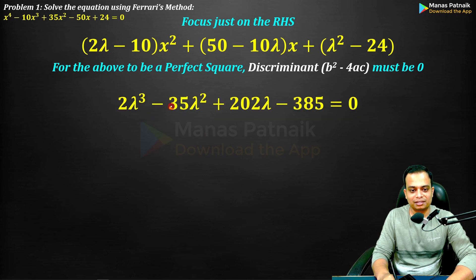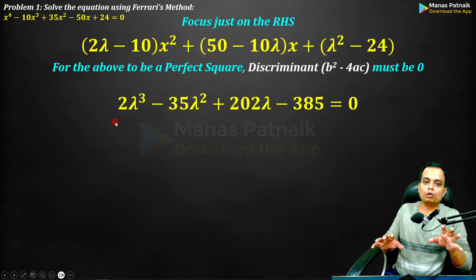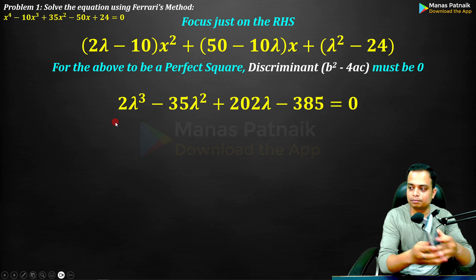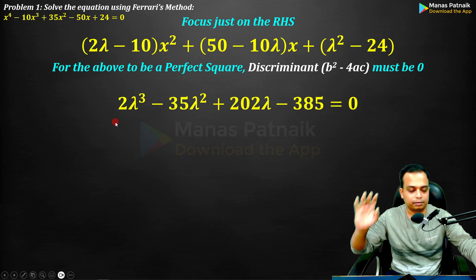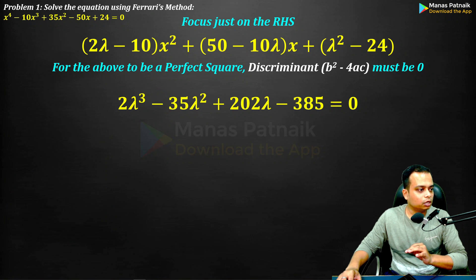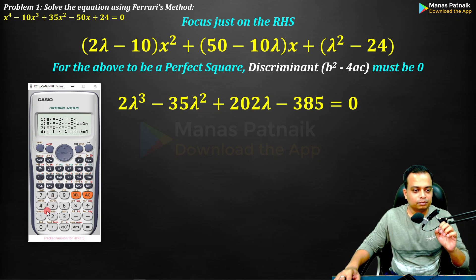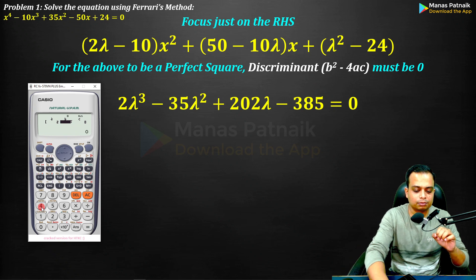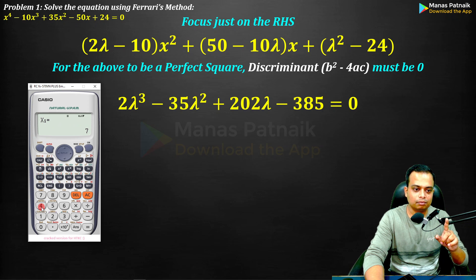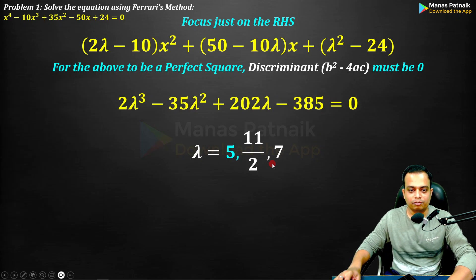Now comes the interesting part. For BTEC students who are allowed to use a calculator, you can find the value of lambda straight away. Go to Mode, use 5 for equation, it's a cubic so press 4. Enter A = 2, B = −35, C = 202, D = −385 and hit enter. The three roots are: lambda = 7, lambda = 11/2, and lambda = 5.